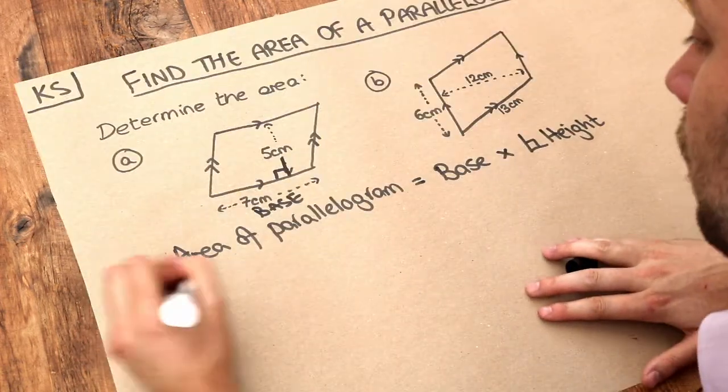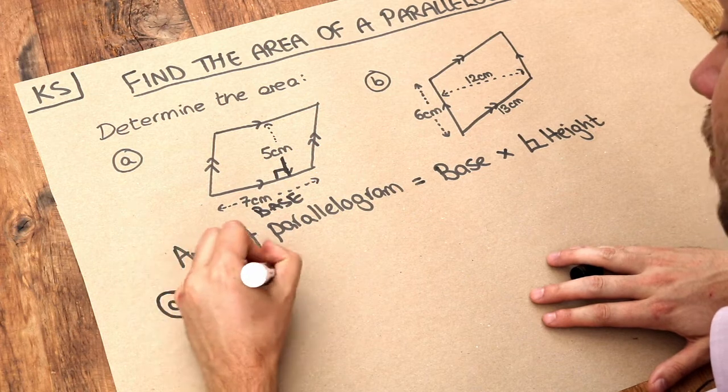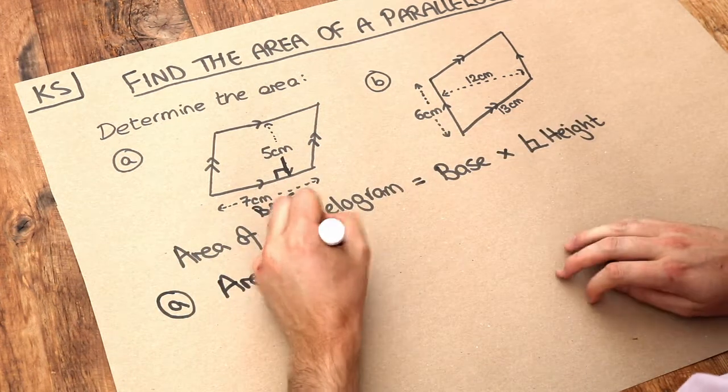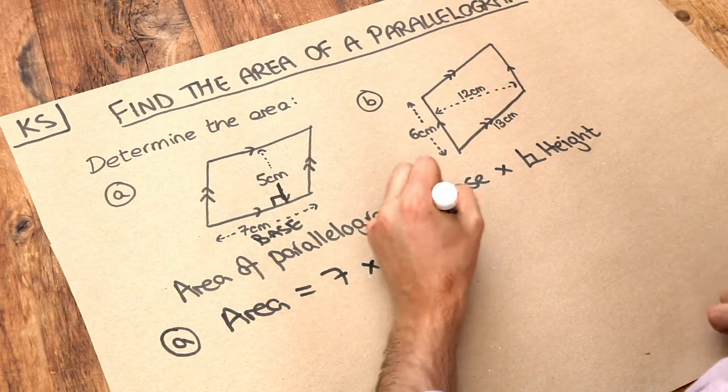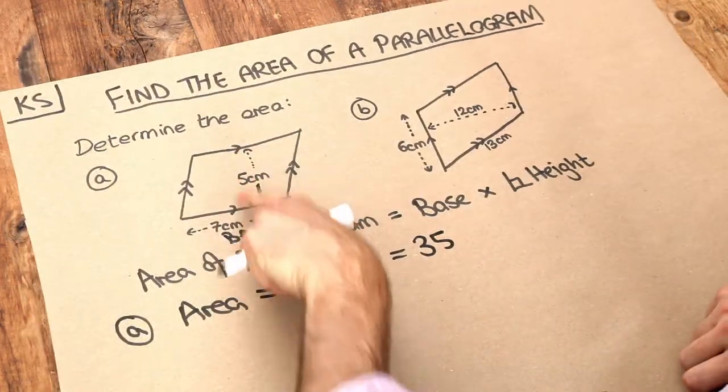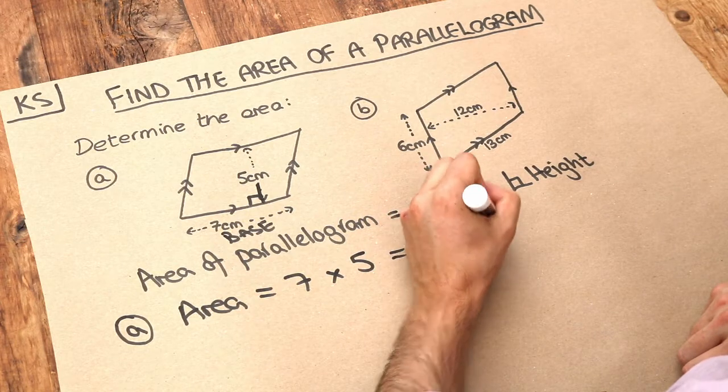So A is nice and simple. The area is just the base of seven times by the height of five, and that gives you 35. And because those units in centimeters, it's going to be centimeters squared.